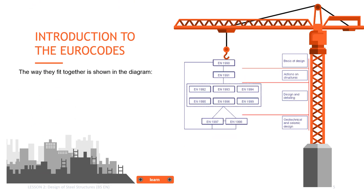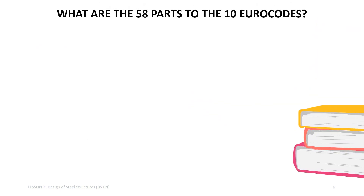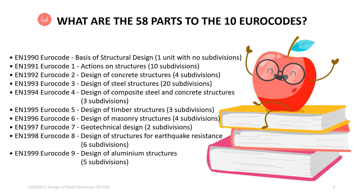The way they fit together is shown in the diagram. They comprise basis of design, actions on structures, design and detailing, and finally geotechnical and seismic design. The 10 Eurocodes are further divided into parts covering individual types of structures, such as buildings, bridges, silos, towers and masts. In total, there are 58 parts to the 10 Eurocodes.